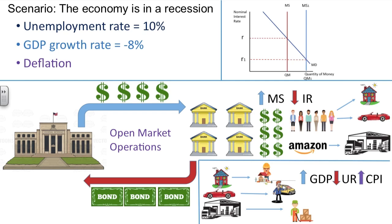Remember, the Federal Reserve is responsible for three things: creating economic growth in GDP, keeping a fully employed economy with an unemployment rate of around five to six percent, and making sure that there is a little bit of inflation in the economy of around two to three percent. Hopefully this visual of the Federal Reserve's open market operations will assist in your understanding of how the Federal Reserve obtains their desired results. Thanks and see you next time!